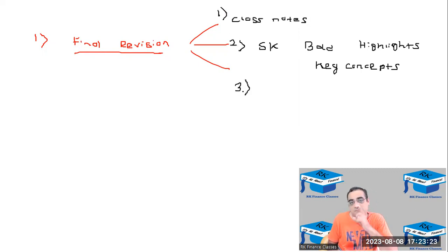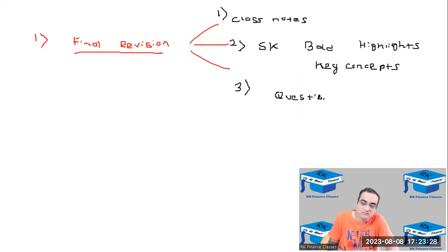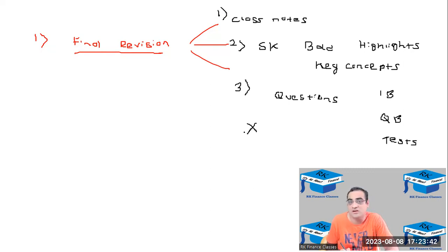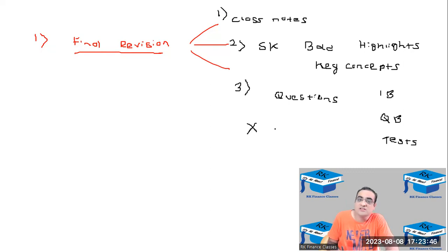Thing number three is the most important. Whatever questions you have solved — whether from the institute book, the question bank, chapter-wise tests, or subject-wise tests — whichever questions went wrong, or which you got right just by fluke and not by thoughtful analysis, analyze those questions carefully. That is going to be the most important part.